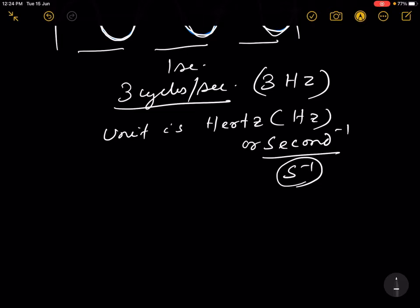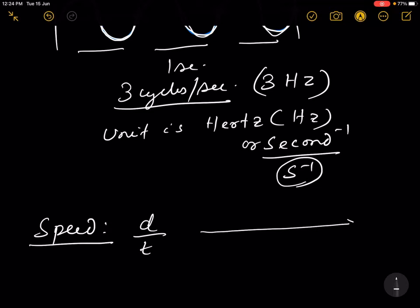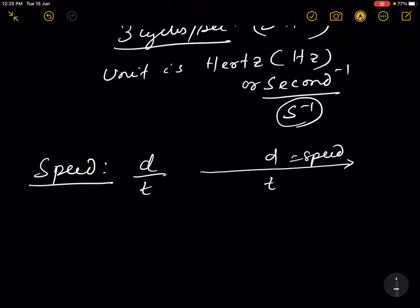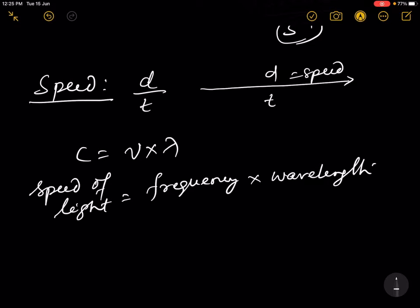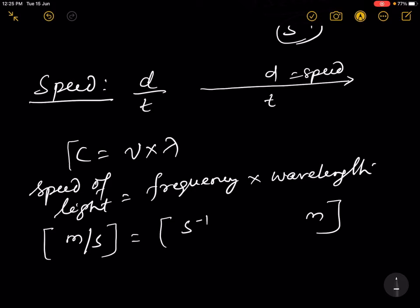Then speed. Speed is distance divided by time. The speed of light is given by c = ν × λ, or speed of light equals frequency times wavelength. The unit of speed of light is meter per second, frequency is second inverse, and wavelength is in meter — you can verify the formula by dimensional analysis.